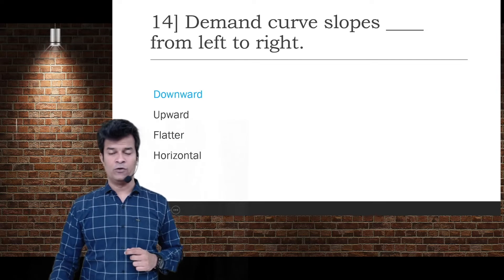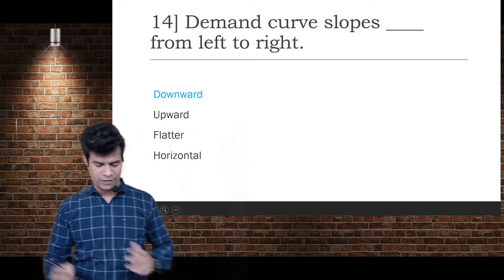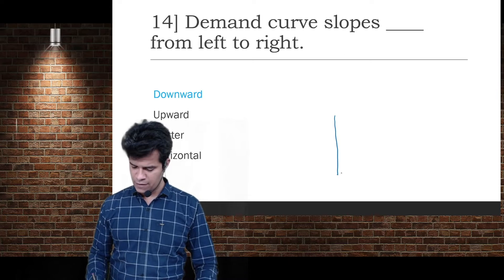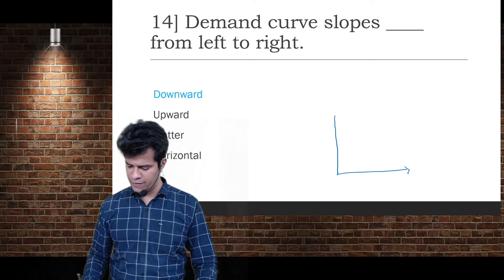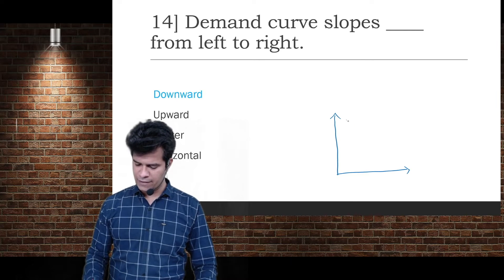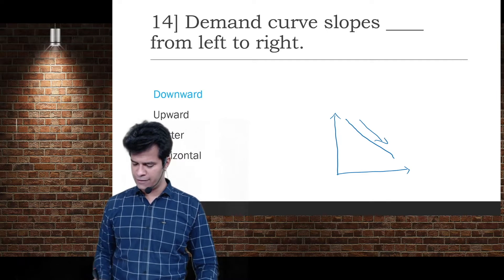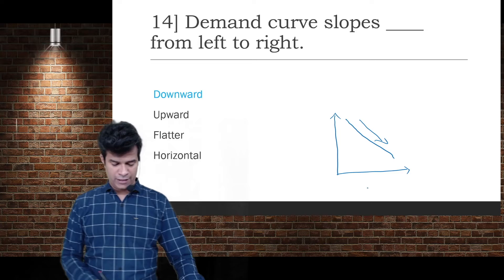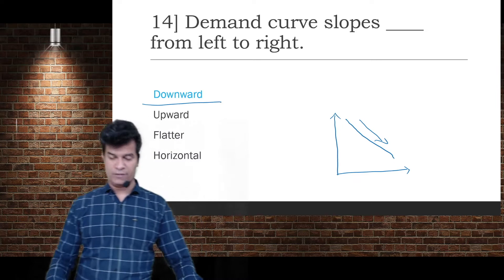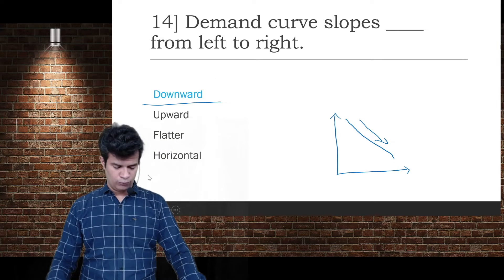Next, the demand curve slopes downward from left to right. This is the law of demand diagram. The law of demand curve moves from left to right downward sloping.